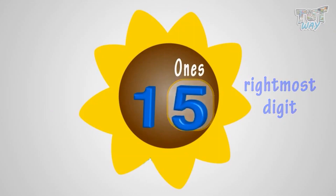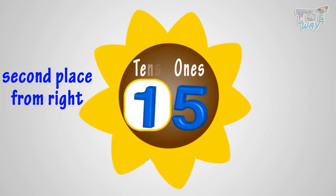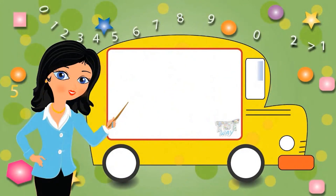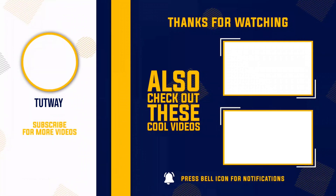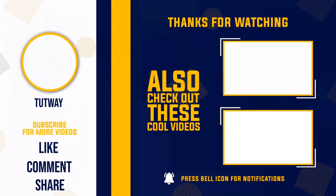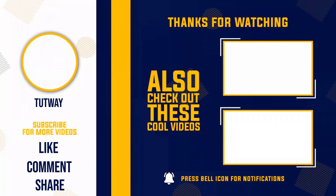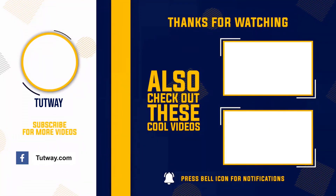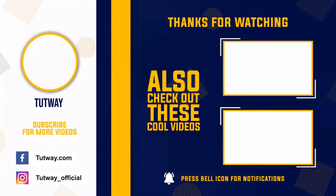Good! So we have learned that the rightmost digit is in ones place and the second from right is in tens place. Now go ahead and take a quiz to learn more. Bye bye! Don't forget to like, comment, and share this video. If you want to see more fun videos, hit that subscribe button. You can also follow us on Facebook and Instagram for more content. Bye!